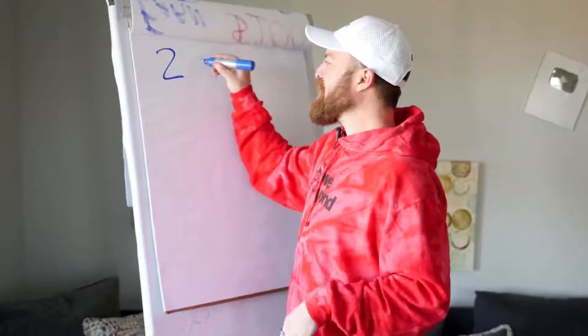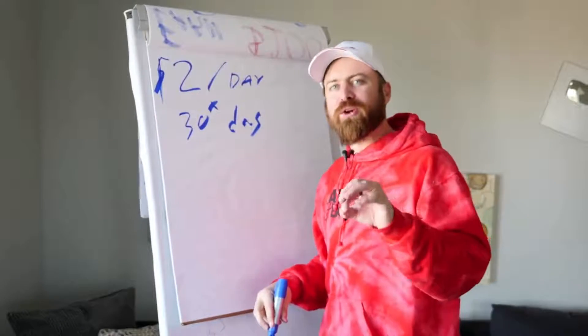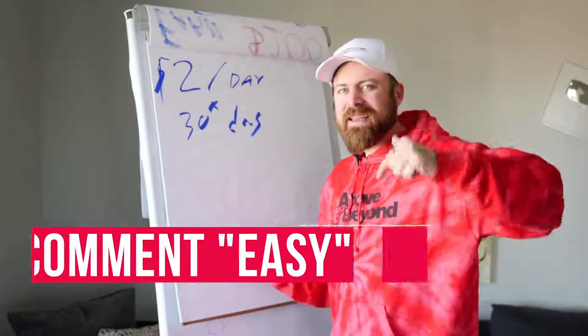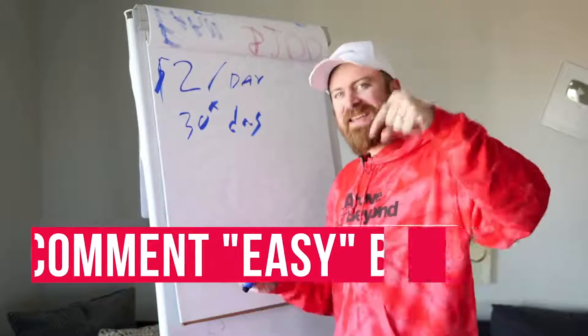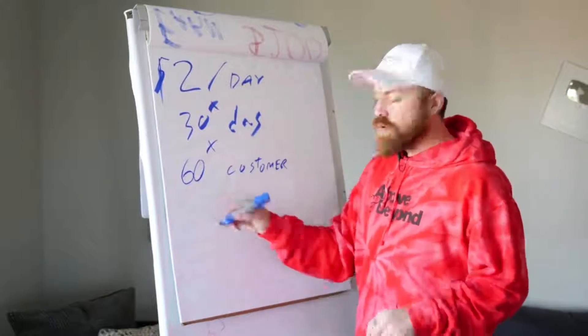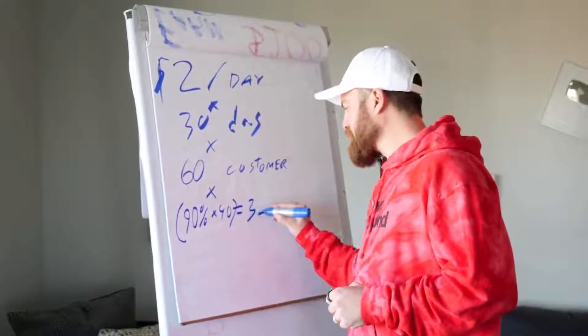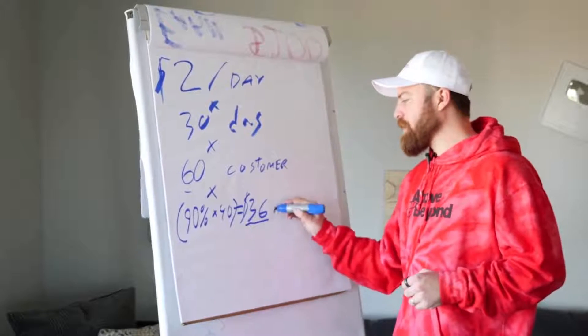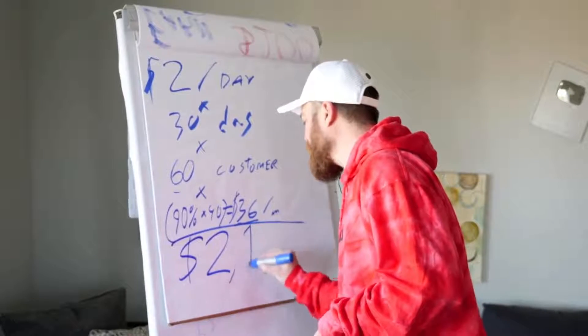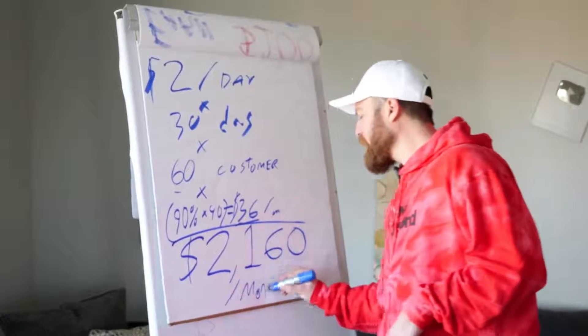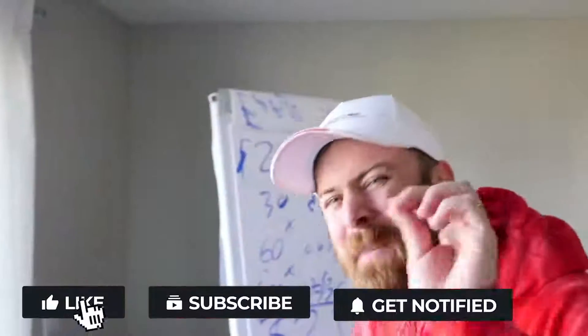Imagine if you just got 2 people every single day to spend $1. Let's do the math. 2 people a day times 30 days — that's 60 customers. The recurring revenue is 90% of $40, which is $36. So 60 customers times $36 a month leaves you with $2,160 in monthly recurring revenue. If you can get 2 people to spend $1 every day, you'll be getting roughly over $2,000 a month in recurring revenue.